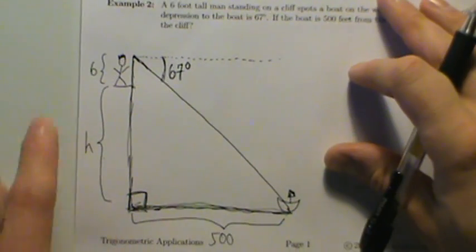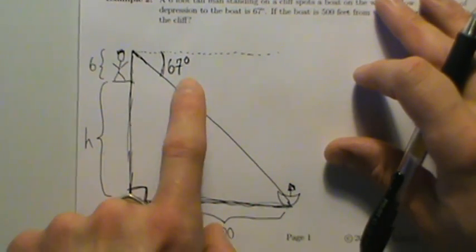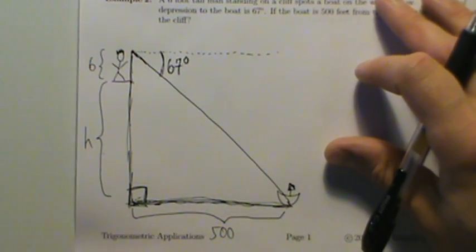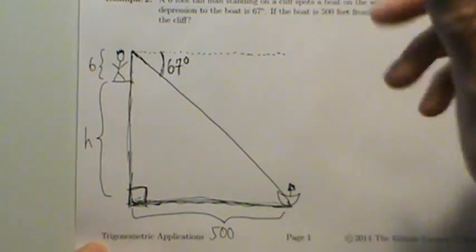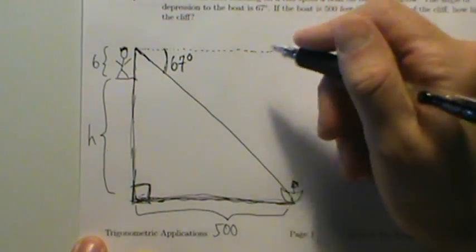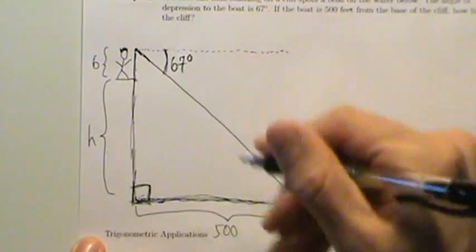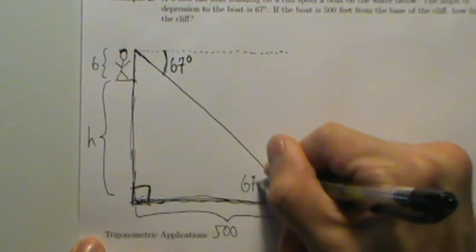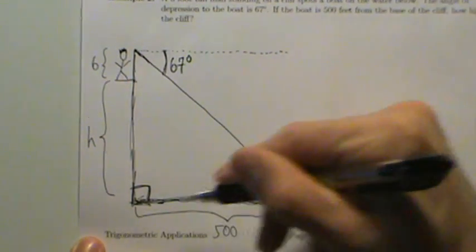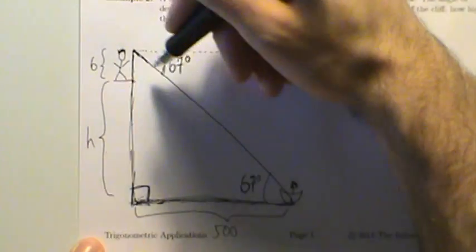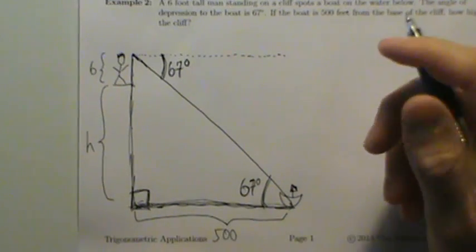So how does that help us? We're trying to find h. We know this is 500, this angle is 67 degrees, and this guy is 6 feet tall. Remember from geometry: if you have two parallel lines cut by a transversal, then the alternate interior angles are congruent — they have the same measure. So because this dotted line up here is parallel with the water line, and they're cut by this straight line, this angle and the angle inside the triangle are the same — both 67 degrees.